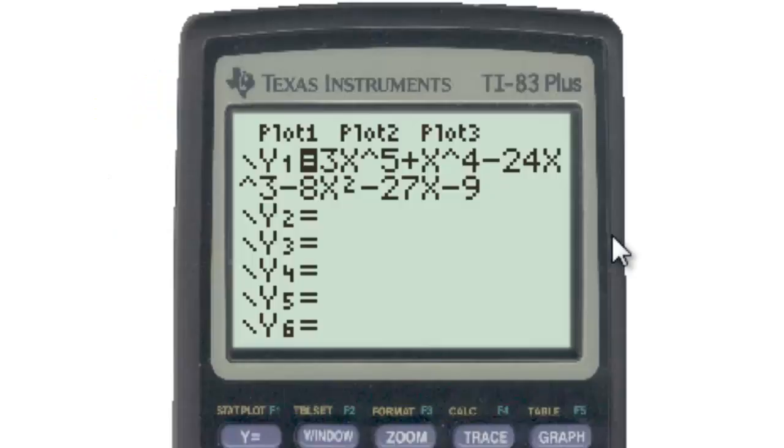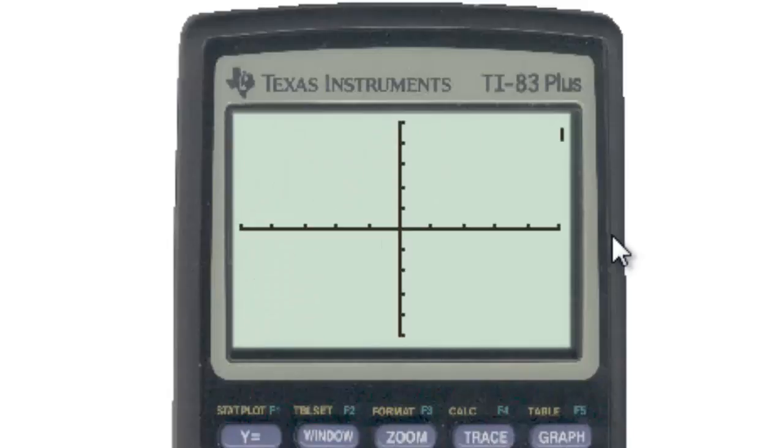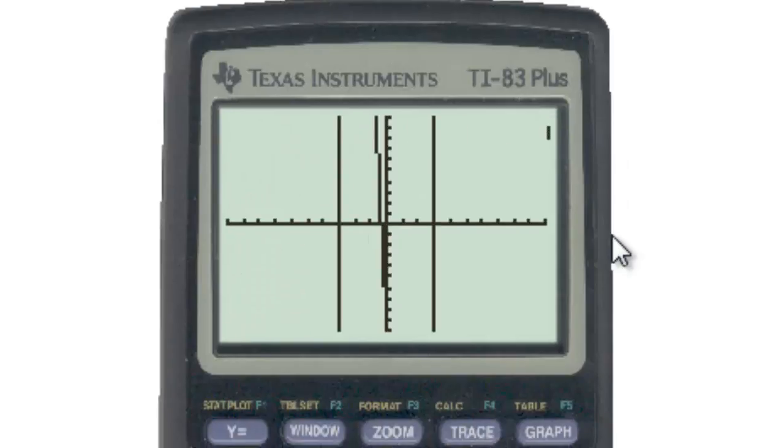Our next step is to graph it. I'm entering it into the graphing calculator here. So in this, we're not really concerned with what the maximum and minimum are on the y's. We're concerned with these zeros. So looking at our zeros here, we had potential of 1, 1/3, 3, and 9.